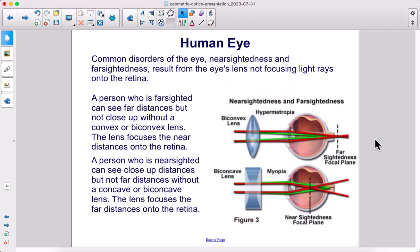Common disorders of the eye, nearsightedness and farsightedness, result from the eye's lens not focusing light rays onto the retina. A person who is farsighted can see far distances, but not close up without a convex or biconvex lens. The lens focuses the near distances onto the retina.